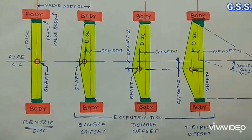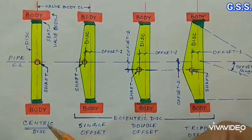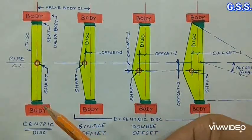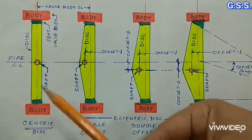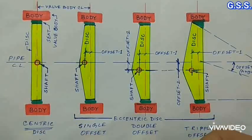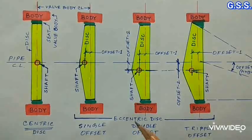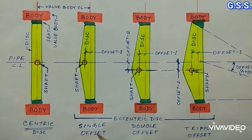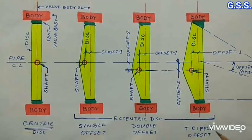This is top view of various types of butterfly valves. Red color is valve body, yellow color is valve disc and green color is valve seat. As per shaft and disc configuration, butterfly valves can be of centric that means concentric type and eccentric type. Eccentric type can be of three types, single offset type, double offset type and triple offset type.